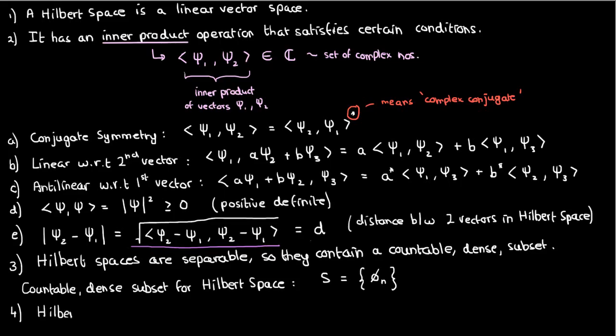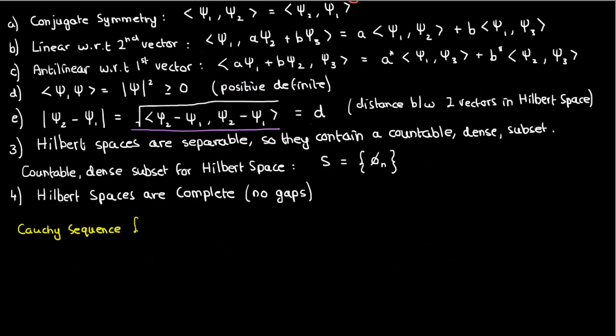The last property of Hilbert spaces is that they're complete, and formally this means that there aren't any gaps. Formally, this means that every Cauchy sequence, or a sequence in which two members of the sequence get arbitrarily close to each other as we go further down the sequence, every Cauchy sequence converges to an element phi in the Hilbert space.